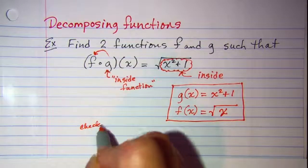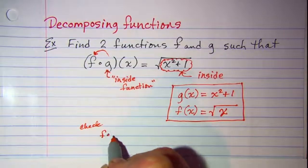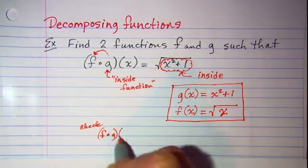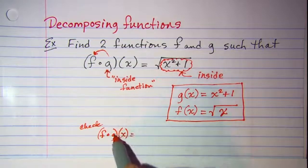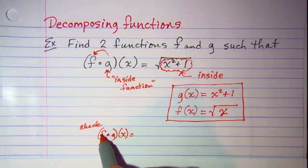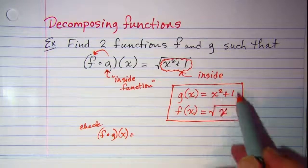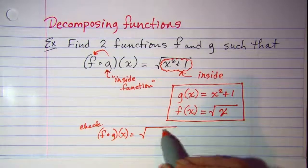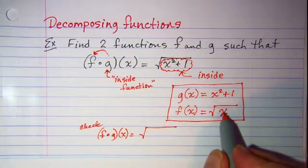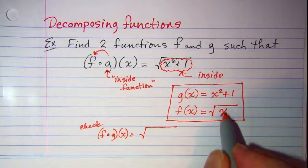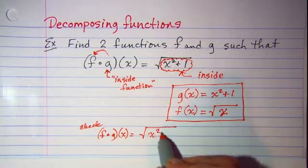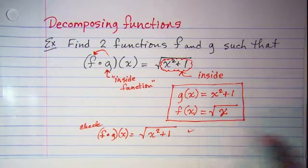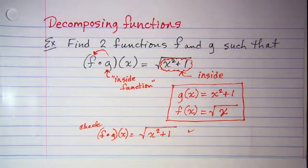If I were doing f composition g, I would have to put g into my f function, so my x squared plus 1 has to be put into my f function. I need to take the x out and put in x squared plus 1. So that checks. Let's do another one.